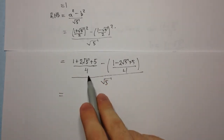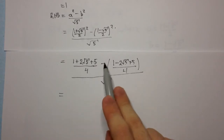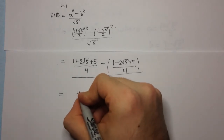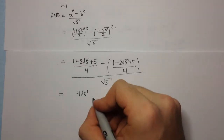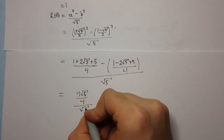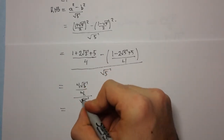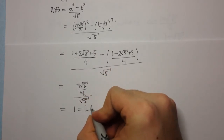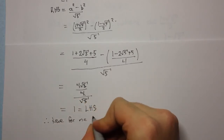Now we have a common denominator so we can simplify: 1 minus 1 is 0, 2 root 5 plus 2 root 5 is 4 root 5, and 5 minus 5 is 0. That's over 4, and all that is over root 5. This will cancel with that, and we're left with 1, which is equal to the left-hand side. Therefore it's true for n equals 2.